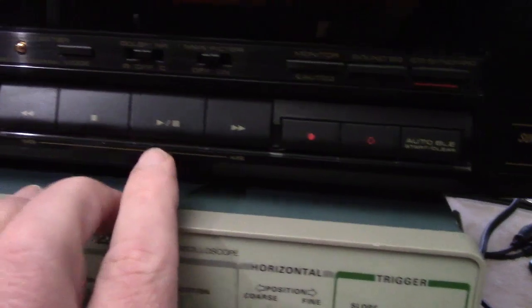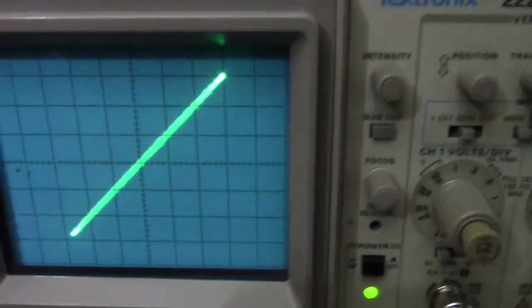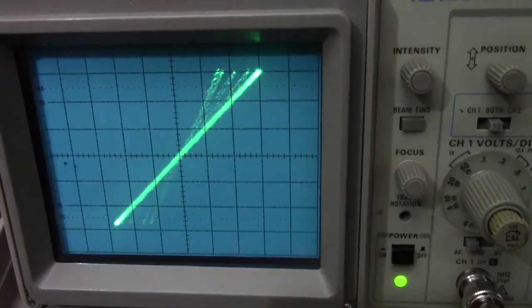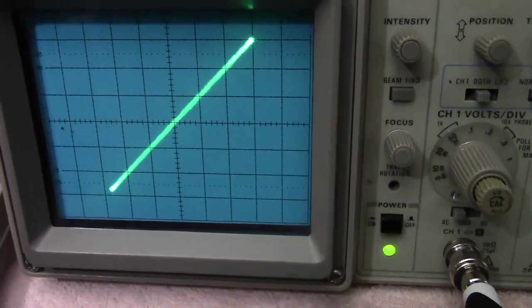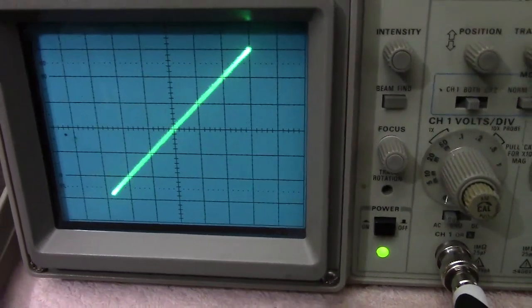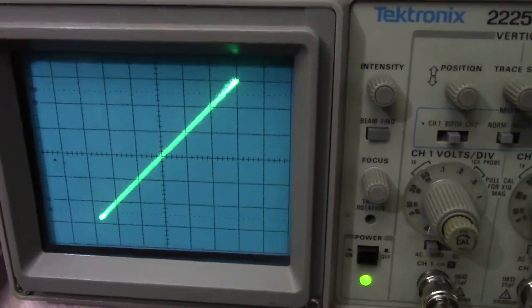Now I'm going to hit record and then the play. So now we're looking at what the tape head is seeing and you can see that it is in phase and the lines are not wacky so that means that the tape is aligned properly.